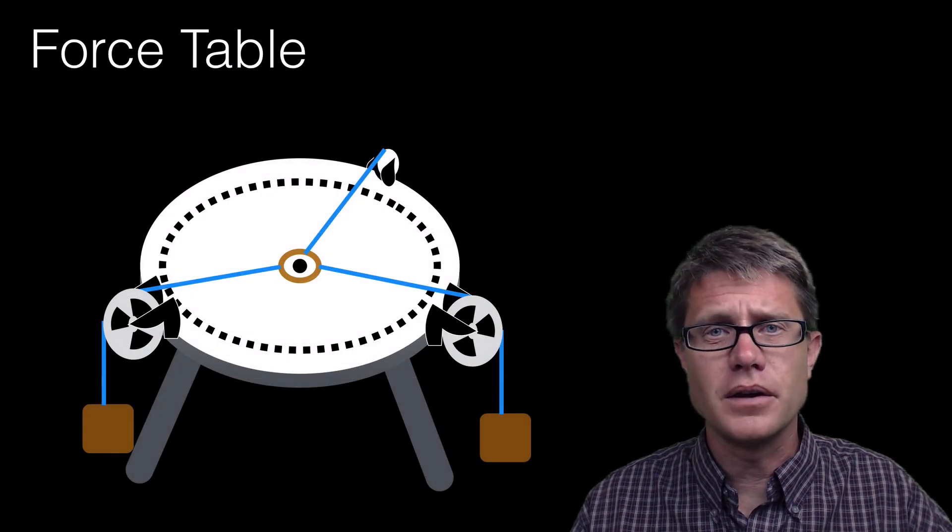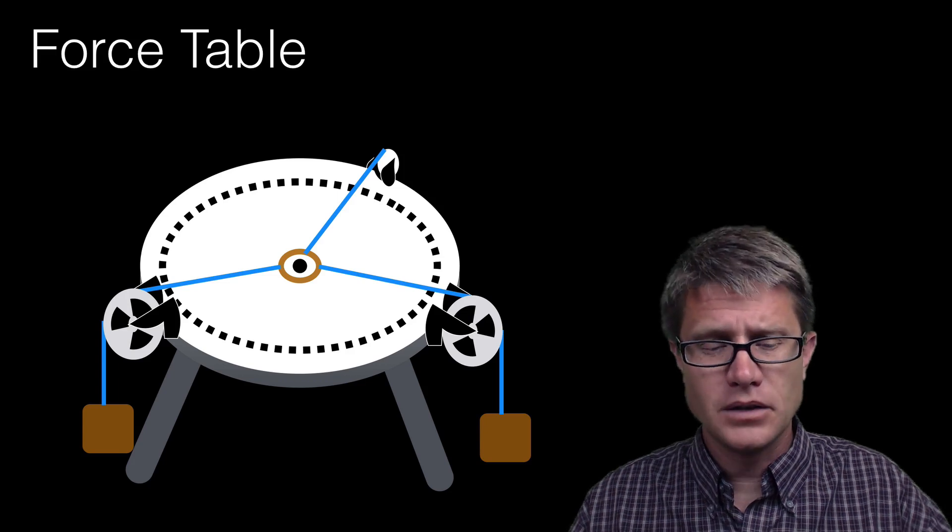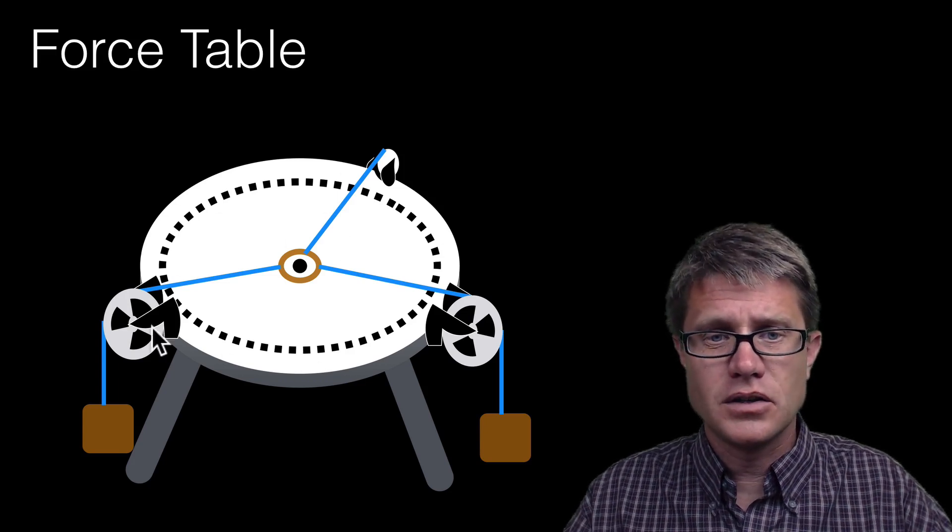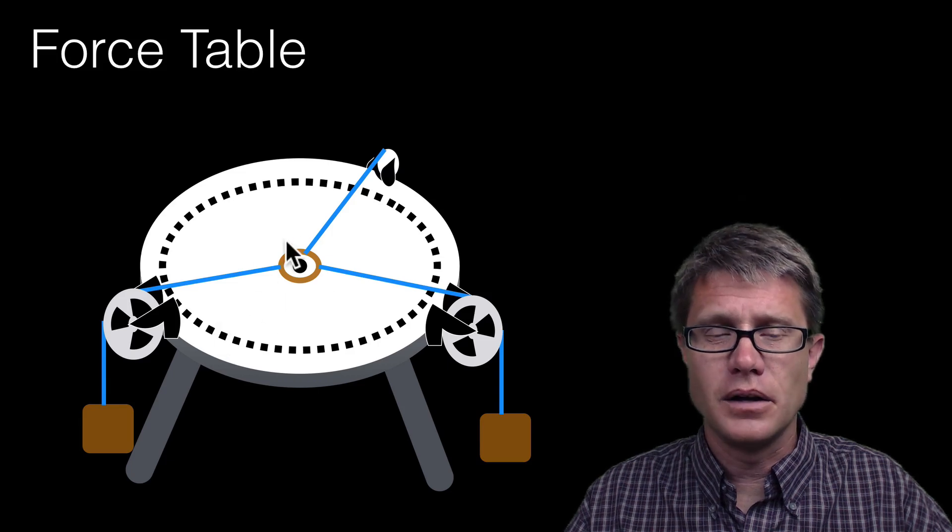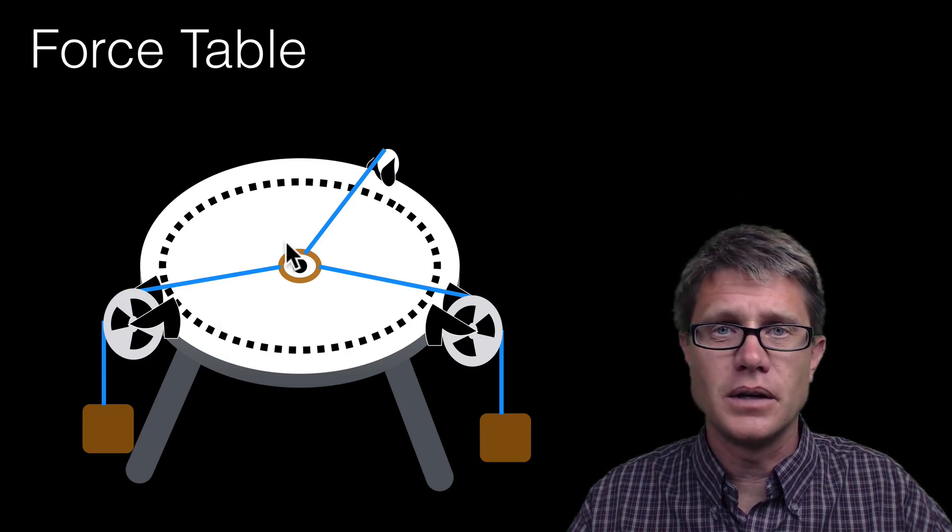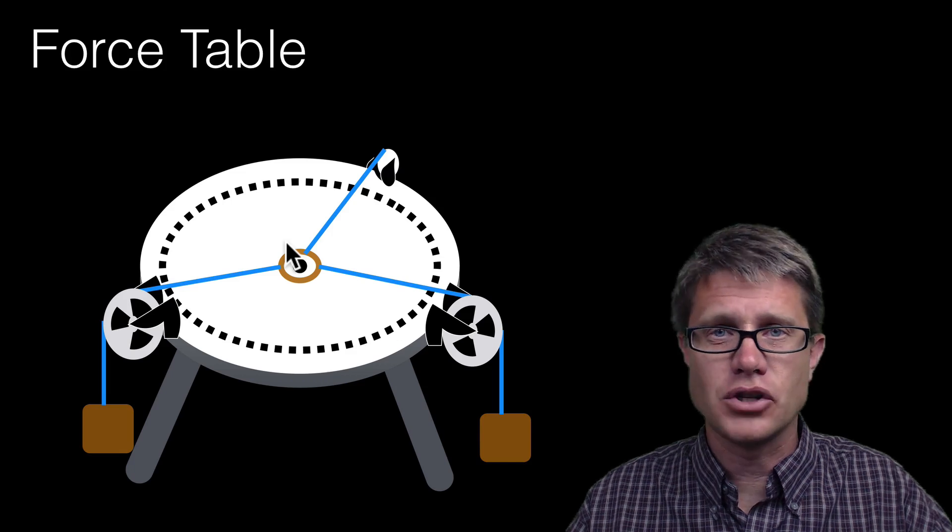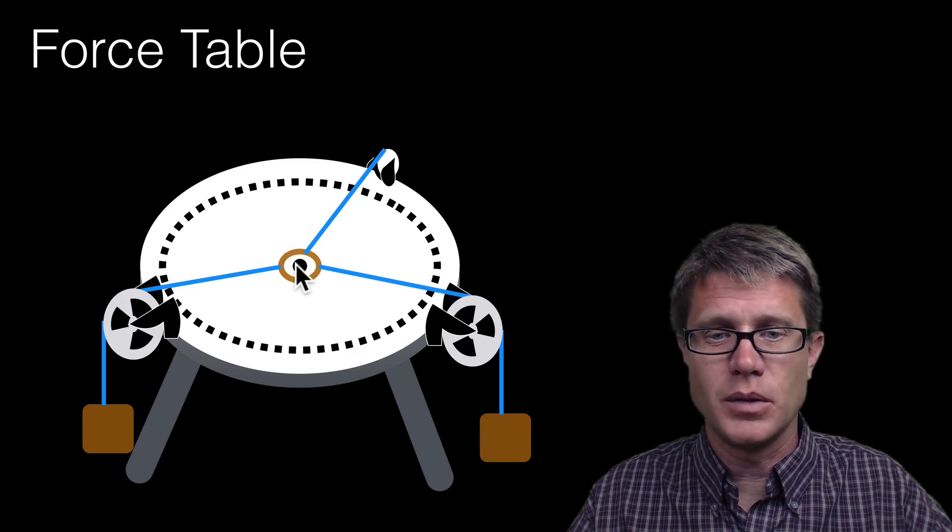And if you want to play around with this in the physics lab you can use a force table. And so a force table is simply a circle. And then we have pulleys around the outside with a ring in the middle. And we can attach different strings to it and apply different forces to that ring in the middle. It does not go shooting off because you have a little peg right here in the middle.